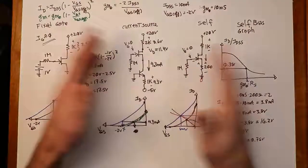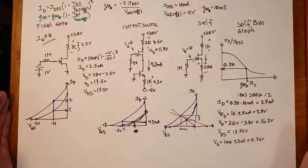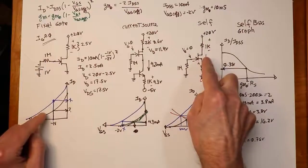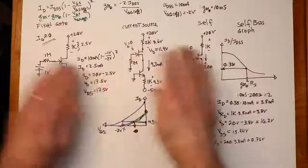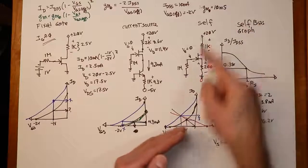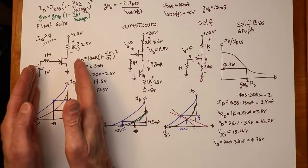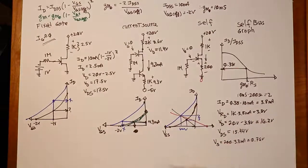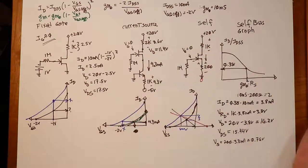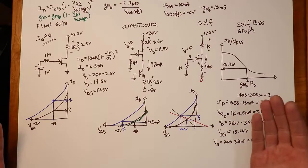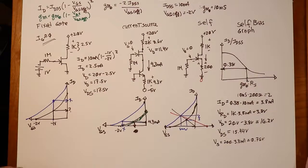Remember to distinguish device equations — like the transconductance equation and the GM0 equation — which apply to any bias configuration, from bias-specific tools like the self-bias graph, which only applies to self-bias circuits. The follow-up video covers AC analysis of these circuits: just as bipolar transistors have common-emitter and common-collector amplifiers, JFETs have common-source and common-drain amplifiers. We'll look at those next time.